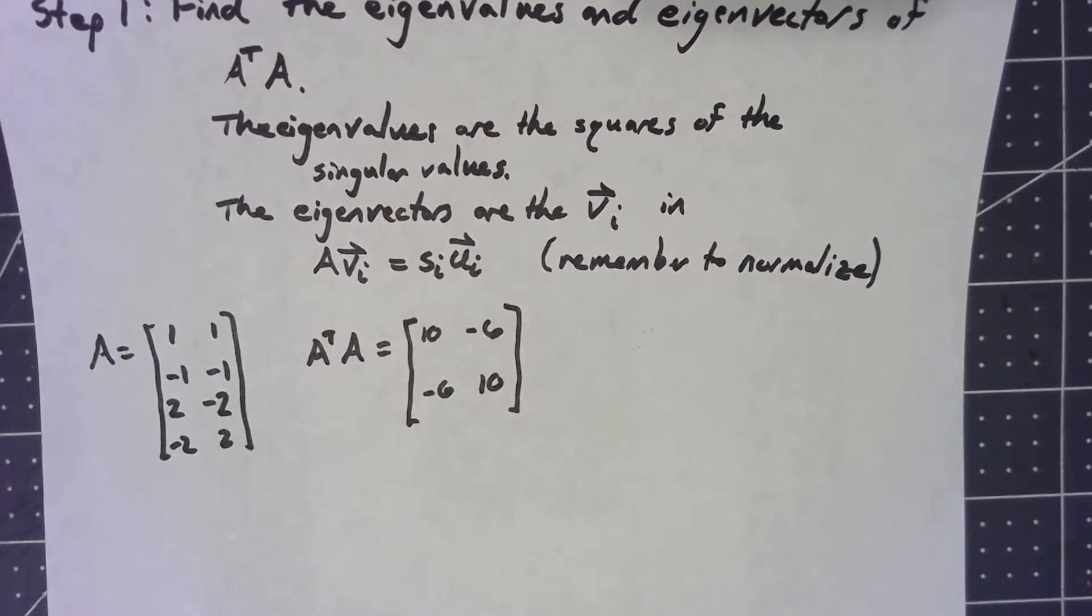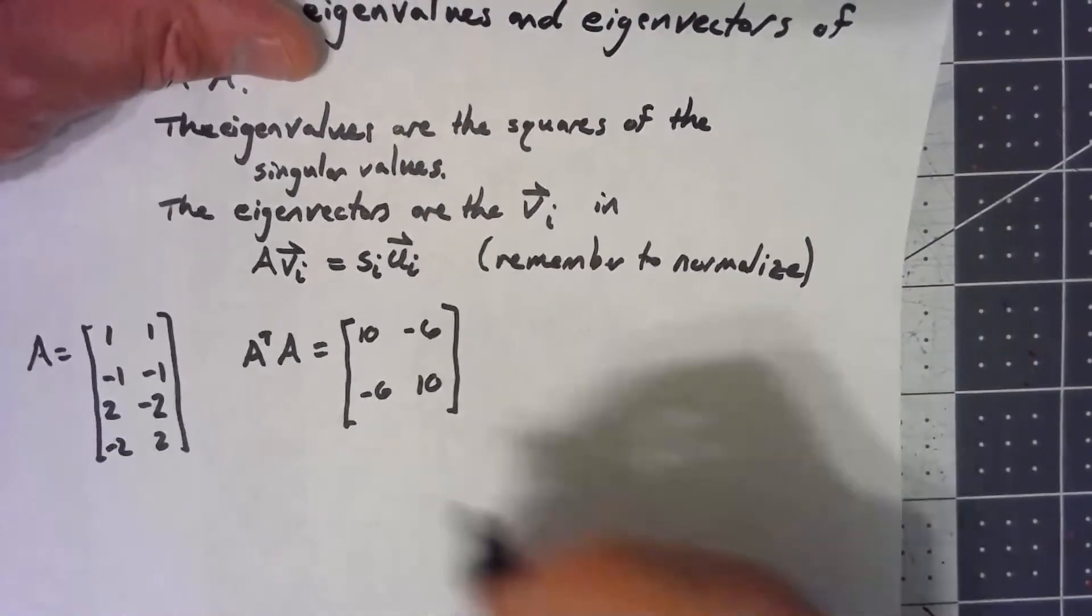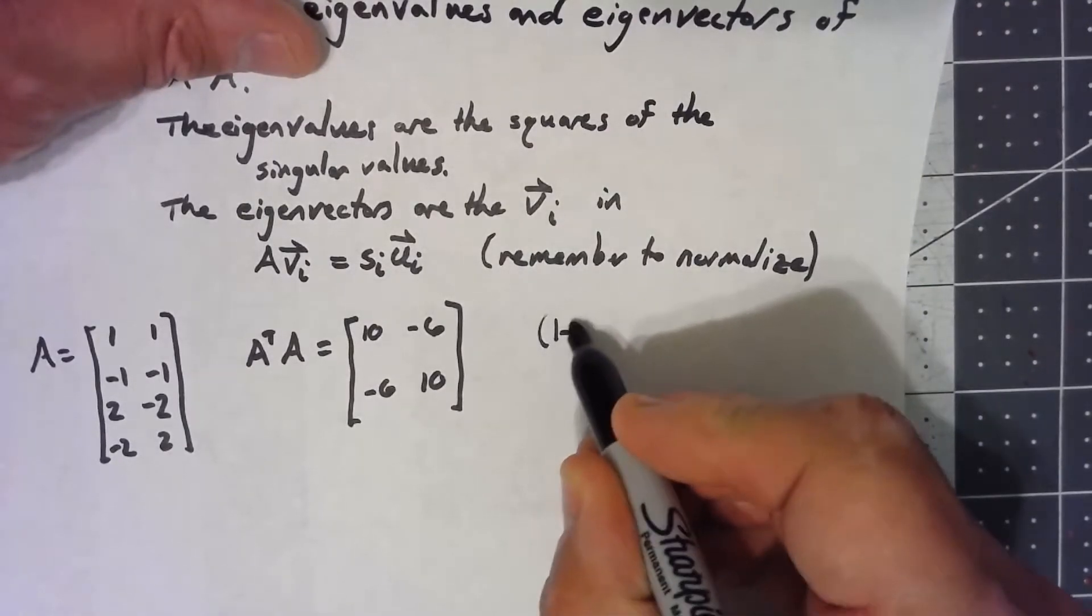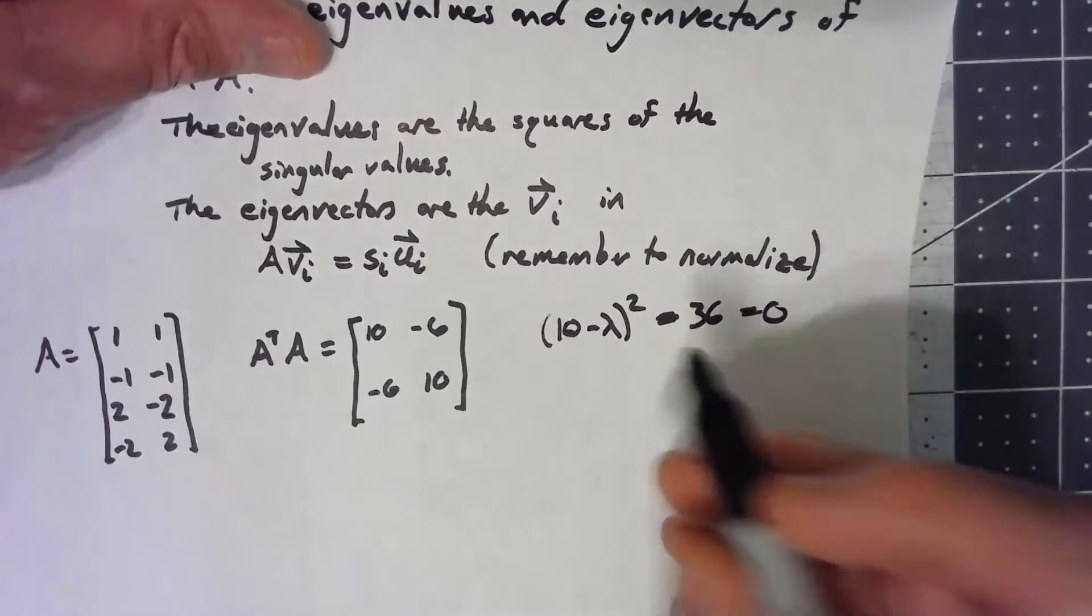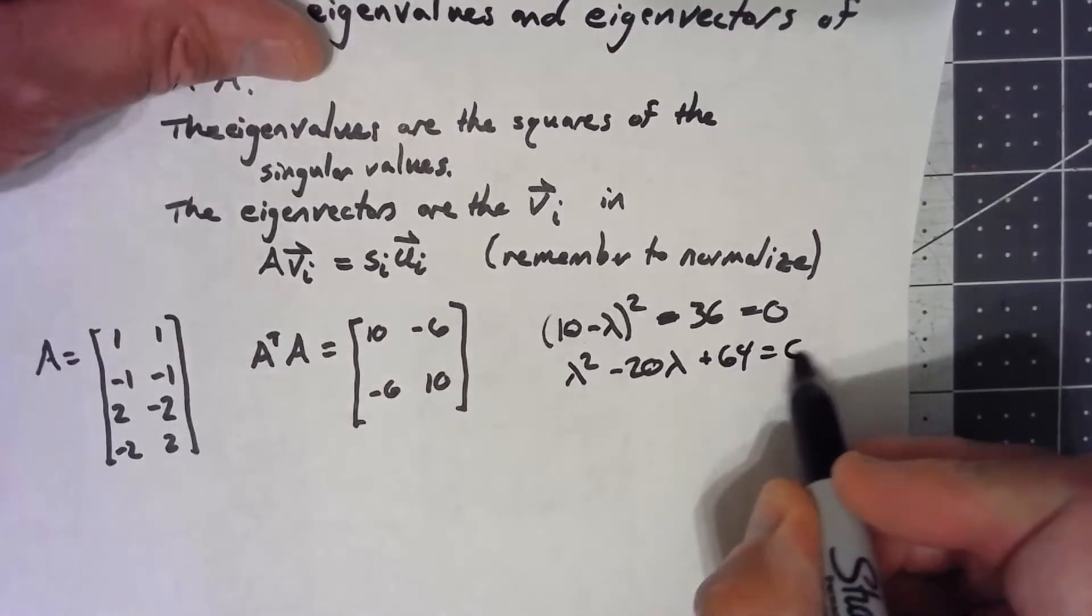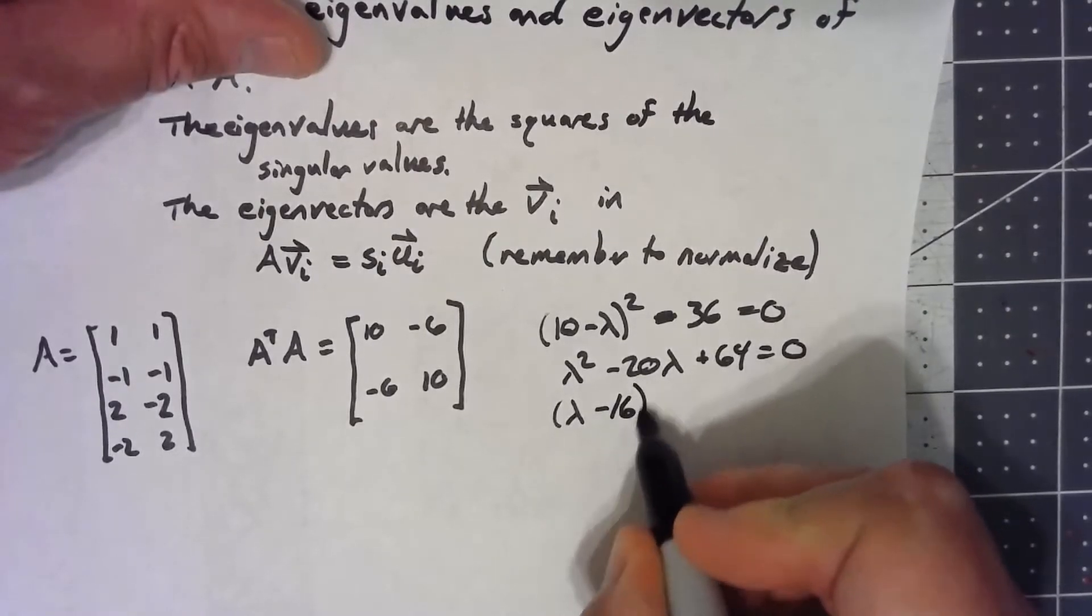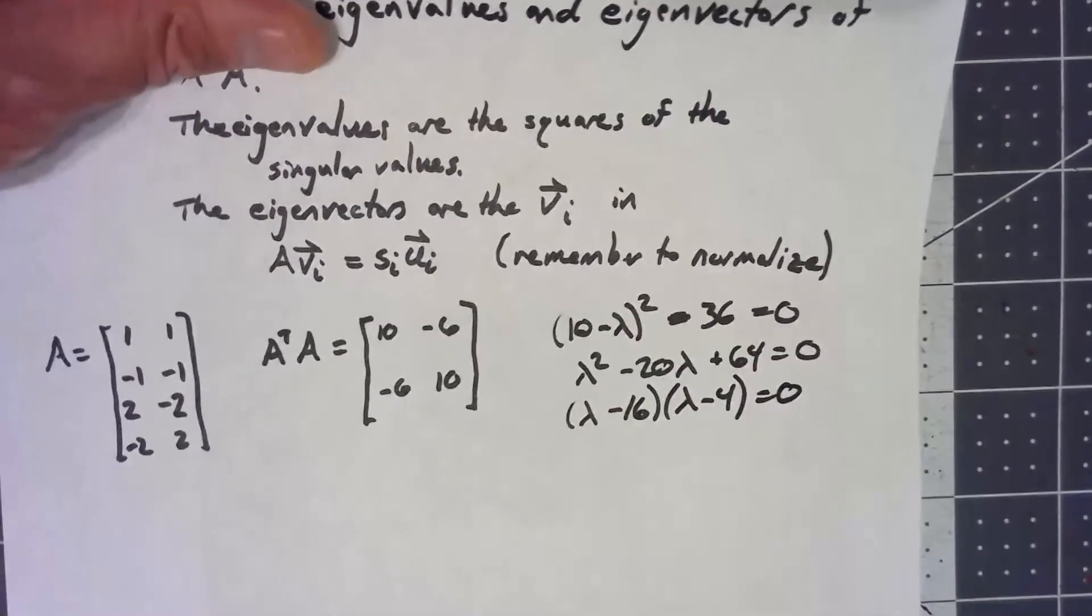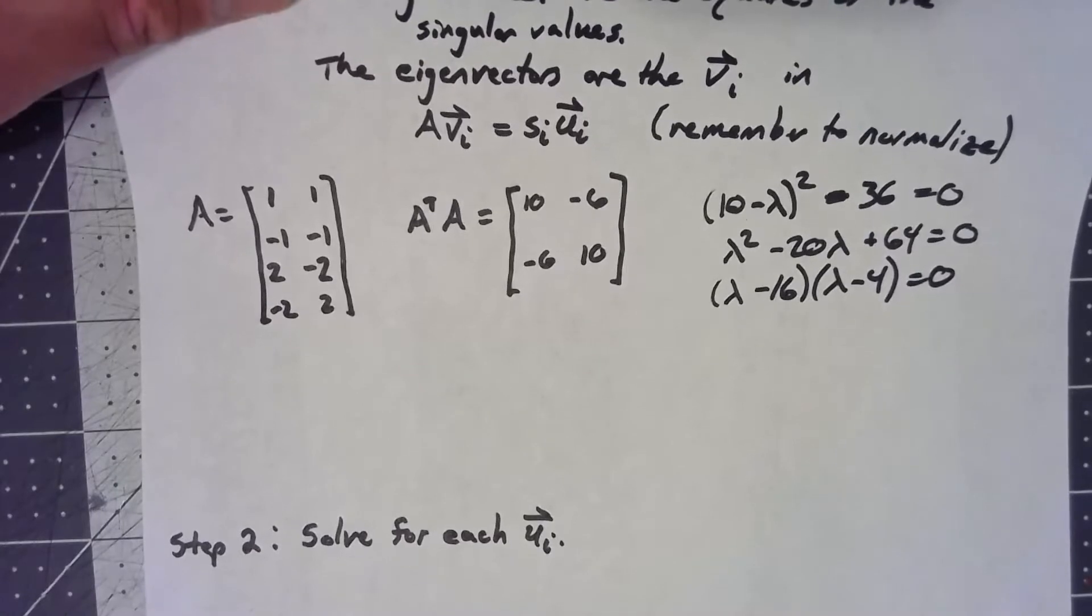In this case, we get the characteristic polynomial. We've got 10 minus lambda squared minus 36, set that equal to 0, gives me lambda squared minus 20 lambda plus 64 equals 0, which factors nicely as lambda minus 16 times lambda minus 4 equals 0. What that gives us then is that my eigenvalues are 16 and 4.